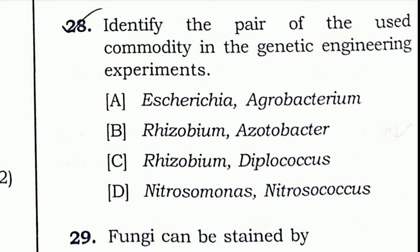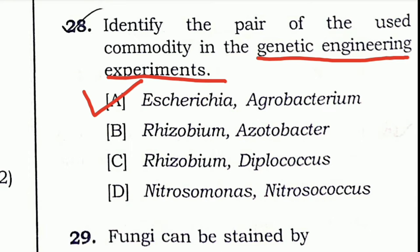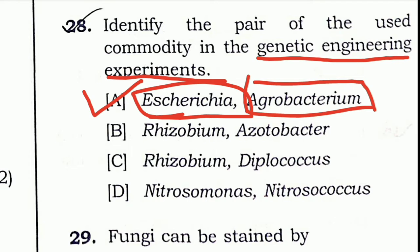Question 28: Identify the pair of organisms used in genetic engineering experiments. Option A: Escherichia and Agrobacterium. Option B: Rhizobium and Azotobacter. Option C: Rhizobium and Diplococcus. Option D: Nitrosomonas and Nitrococcus. Option A is the right answer, because Escherichia coli and Agrobacterium are bacteria widely used in genetic engineering and recombinant DNA technology experiments.